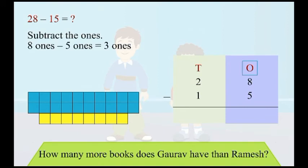Subtract the ones. 8 ones minus 5 ones is equal to 3 ones. Write 3 in the answer under the ones column.